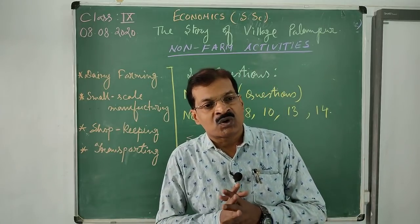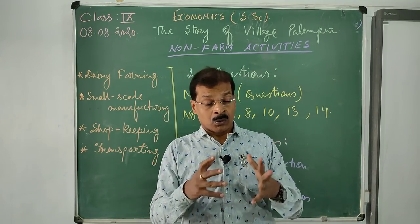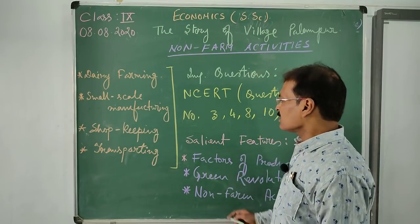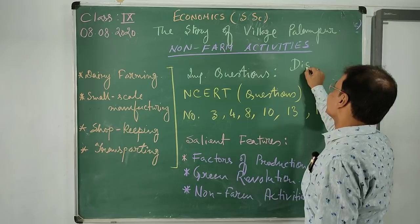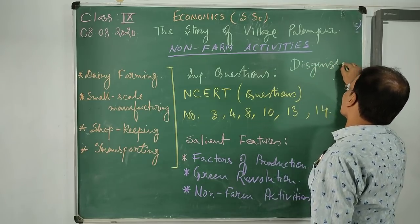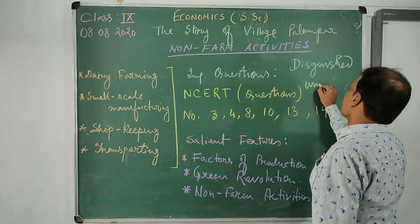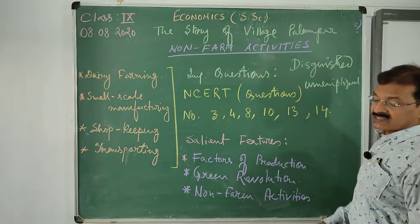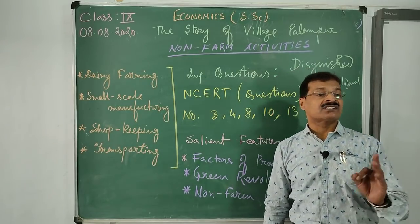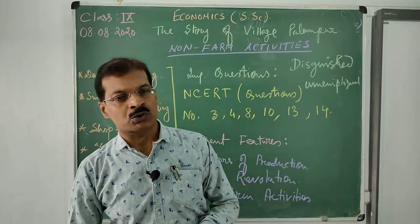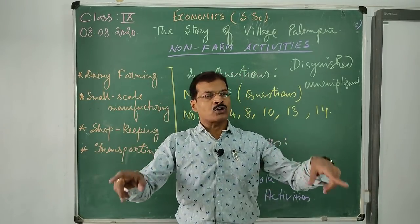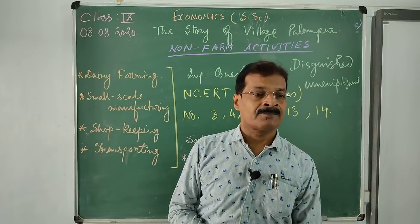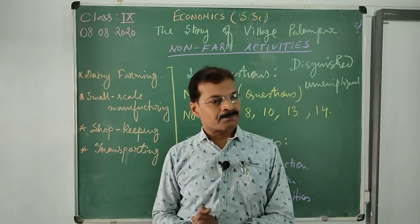Now we will discuss one concept that we will also study in a later chapter - that is disguised unemployment. What is disguised unemployment? Let us suppose in the year 2018 there is a plot of land in which a father and his four sons cultivated and produced five quintals of wheat. Five members produced five quintals of wheat on a plot of land.